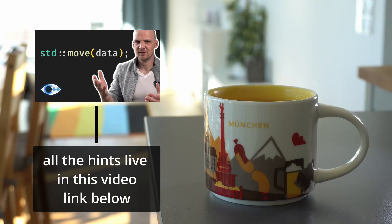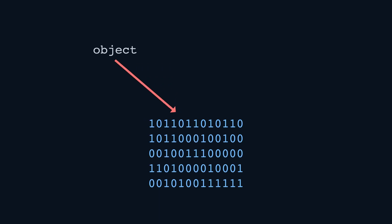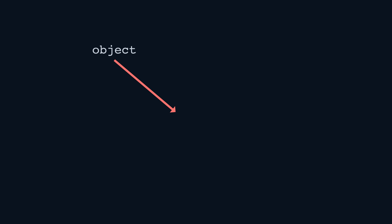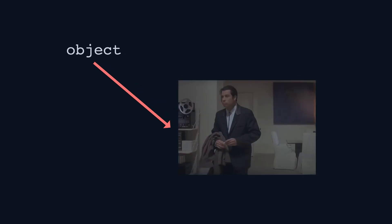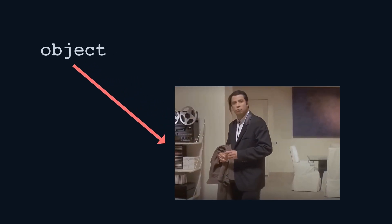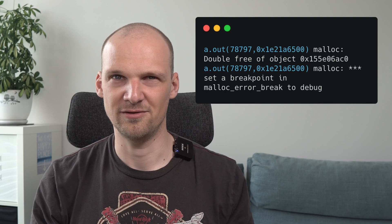Those of you who watched the move semantics video carefully might already notice the issue with such a trivial constructor. The issue is that the trivial constructor just copies over the pointer to a different object, but not the data. So now we have two objects pointing to the same data, and both have destructors that will try to remove that data. The destructor of the other object will succeed at freeing the memory, but the destructor of the original object will try to free memory that has already been freed, causing a runtime error — a double free.